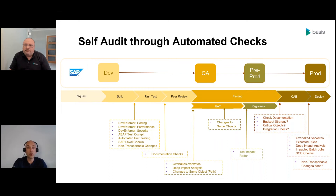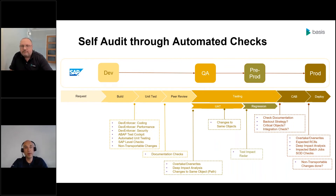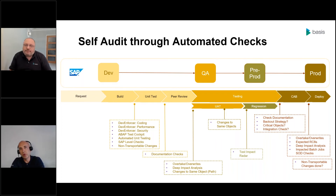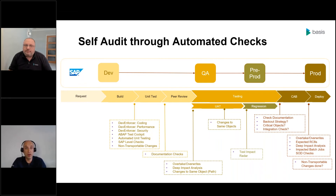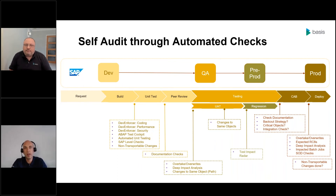These checks take many forms. It could be development checks and coding checks done back in the development system, or automated unit testing checks before transports even leave the development system. It can be about sequencing checks — making sure objects and versions are moving in the correct sequence into the technical QA system and beyond. It could be critical object checks — for example, making sure a number range change is only moved to production at certain times so it doesn't impact the business. From a segregation of duties perspective, these automated checks can make sure that somebody isn't able to perform certain approval steps within the overall process. At Active Control we call these shift-left checks — helping SAP customers identify risk and issues as early as possible, before they cause cut-dates, testing defects, development rework, or production issues.